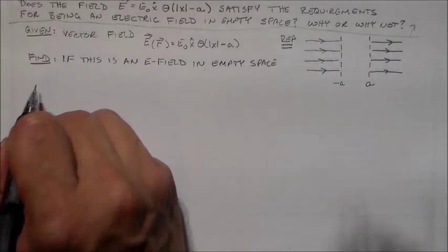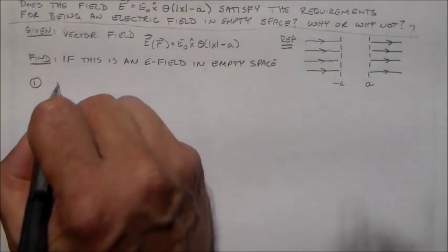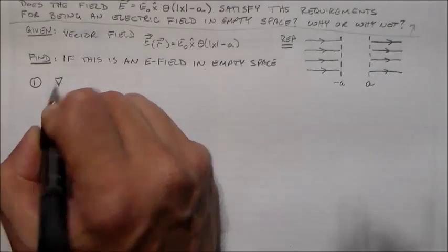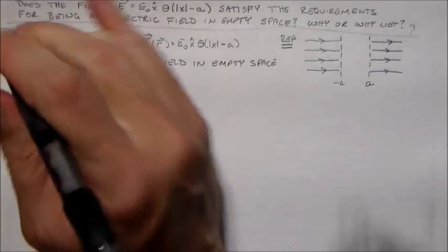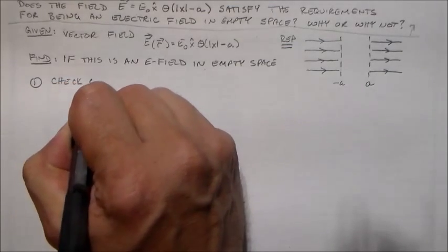When you're interpreting the problem statement down here, that's what I want to see. And then let's see what you're working on. So how am I going to do that? Well, there are two requirements. The curl and the divergence both have to be zero for this thing to be a good electric field in empty space. So let's see. Let's start with the curl.